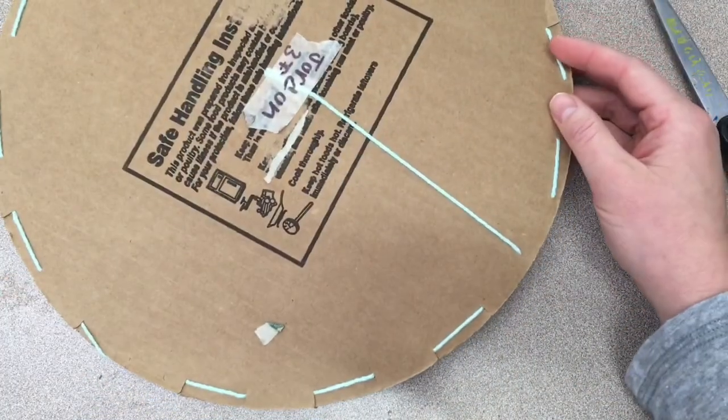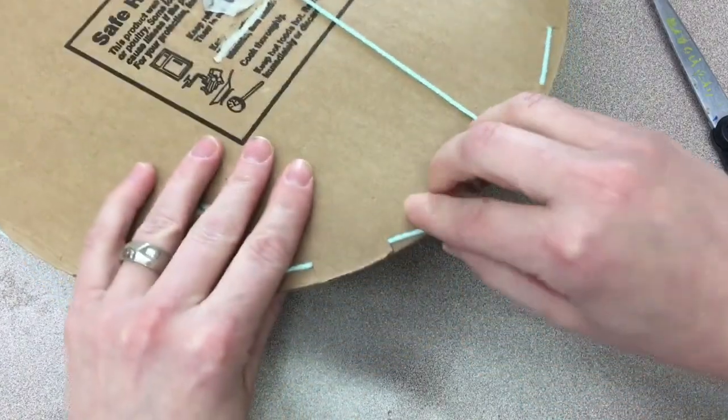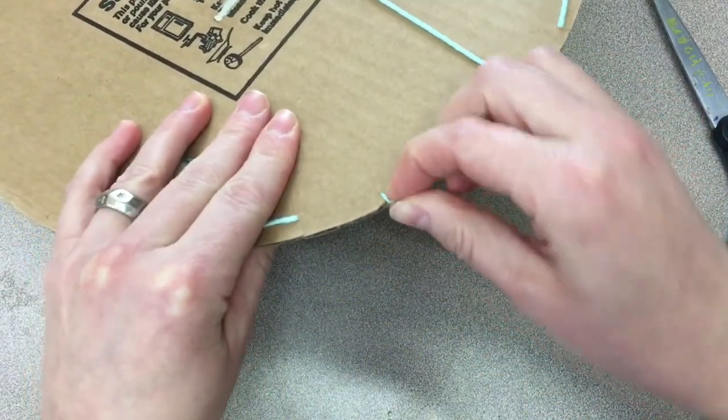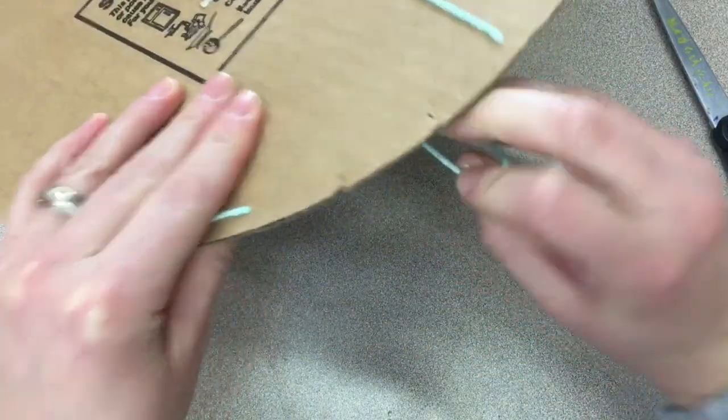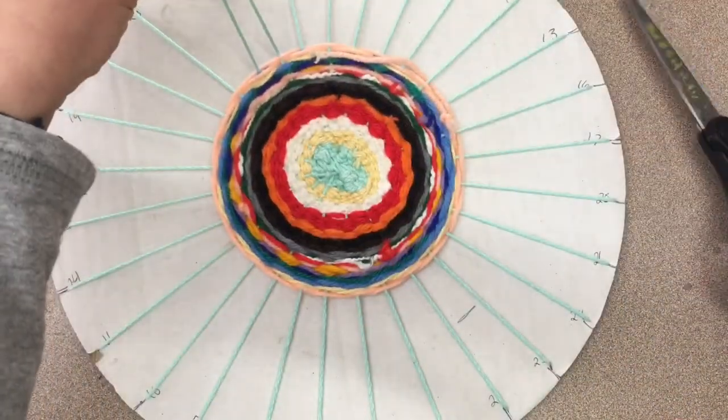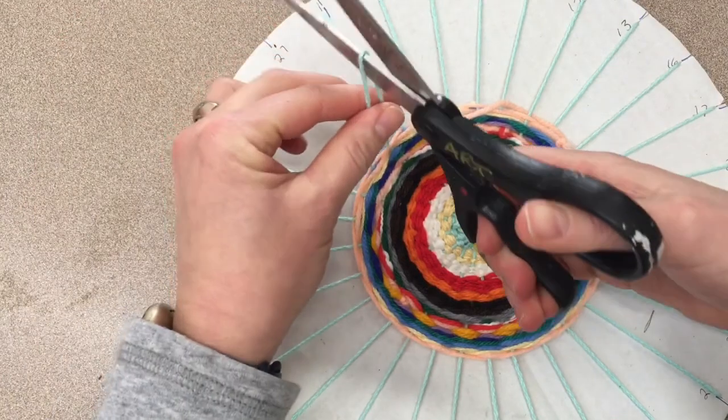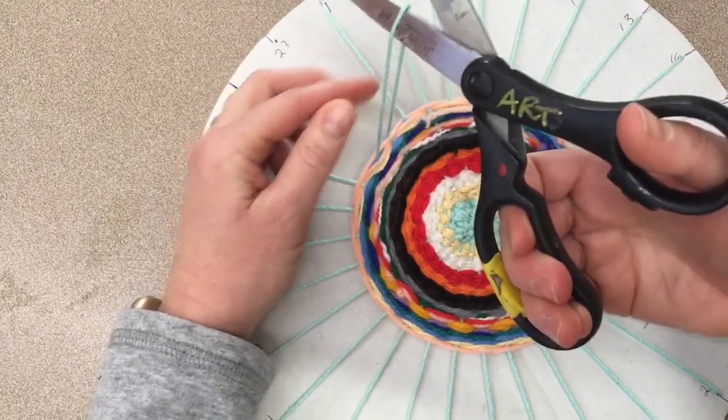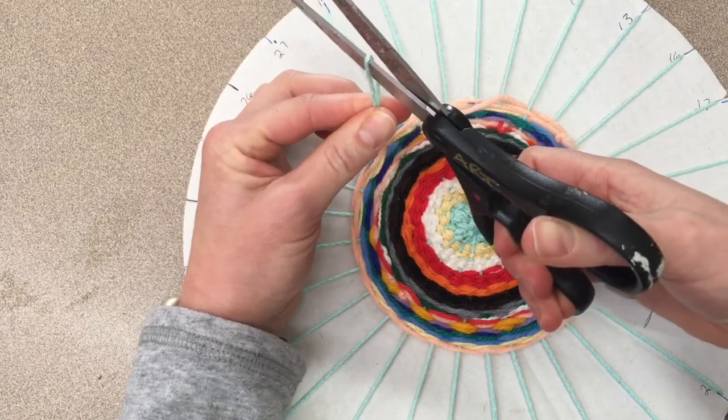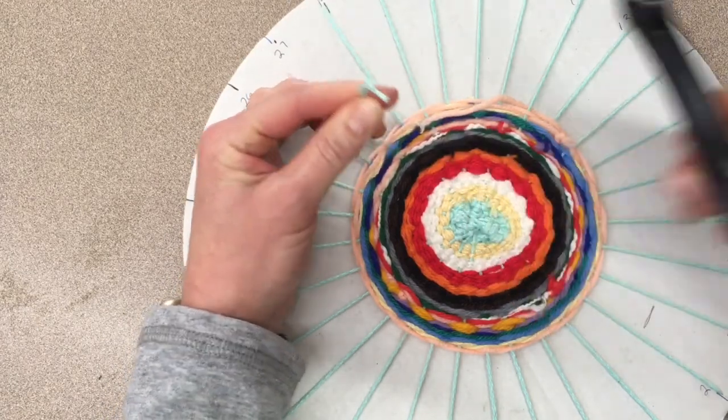We are going to start on the back side and you're going to choose one loop at a time. Gently pop that off of the loom and then I'm going to hold this with one hand and I'm going to cut it at the top. To make it easier to cut, it helps if you hold the string around the scissors like this, pull it tight and cut it.